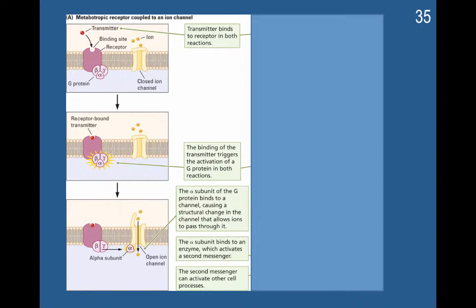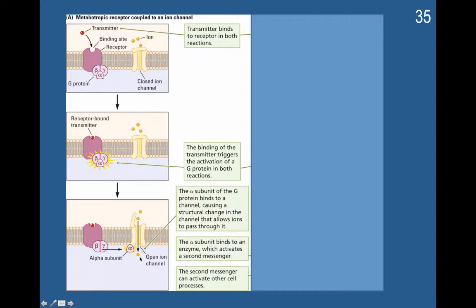Here's an example of how a G protein can indirectly result in the opening of an ion channel. The transmitter binds to receptors, the G protein triggers activation, and the alpha subunit is released. It binds to a channel causing a structural change in that channel that allows ions to pass through it. This is the way that the G protein can cause an influx of sodium or an efflux of potassium.